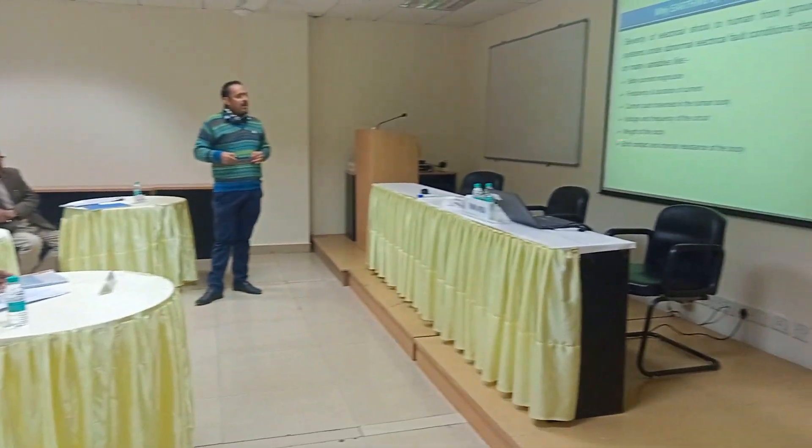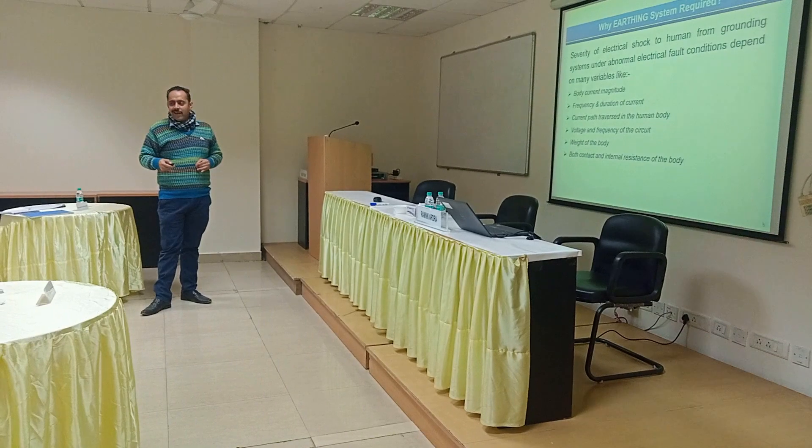Why is a grounding system required? The severity of an electrical shock to a human from a grounding system under abnormal fault conditions depends on many variables: body-to-ground contact, magnitude, frequency and duration of current, current path through the human body, voltage and frequency of the circuit, and weight of the body — both contact and internal resistance. In IEEE standard we have a 70 kg weight and also a 50 kg weight, because you don't know who will be in the substation when you are doing your design.